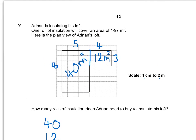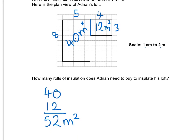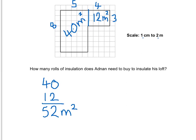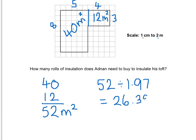Now if we go back to the question, it says one roll of insulation will cover an area of 1.97 metres squared. So we just need to find out how many of those will make up 52. On your calculator, 52 divided by 1.97 gives us something like 26.39. But obviously, in order to cover that extra decimal on the end, you're going to need to buy 27 whole rolls to cover all of it. So the answer is 27.